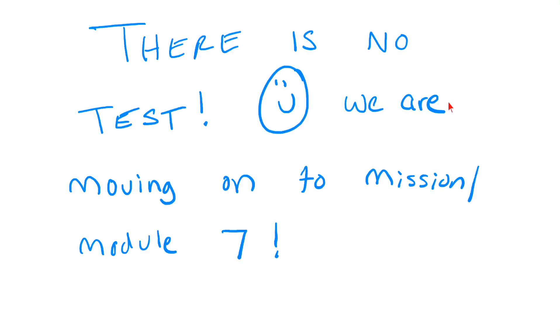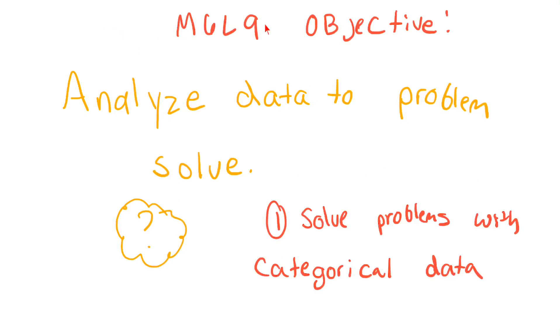So we're just going to move on to Module 7. The objective for Module 6, Lesson 9 is this: analyze data to problem solve. So once again, we're looking at the data, we're looking at the different types of graphs, and we're answering questions about the graphs. The first thing we're going to do is solve problems with categorical data.